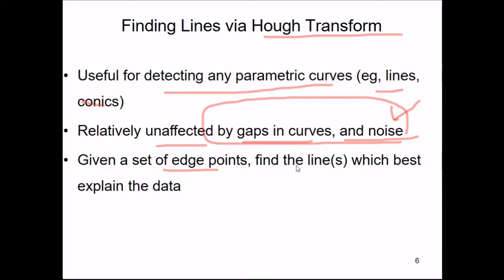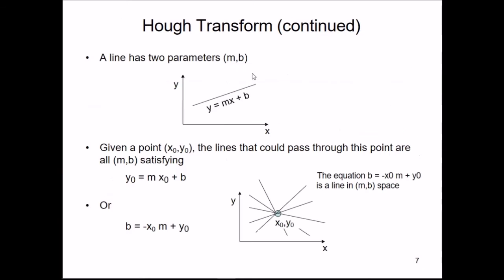Given a set of edge points, we find the lines which best explain the data. A line has two parameters. A line is given by y = mx + b. This line has a slope m and intercept b. Here b is the intercept and m is the slope, equal to tan(theta). This particular line is b.